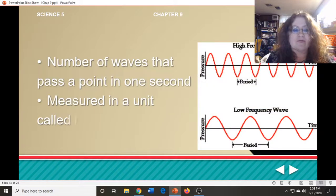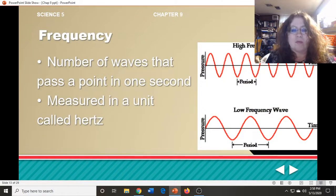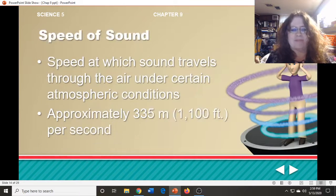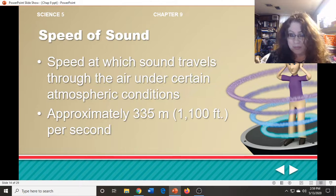We talked about frequency, the number of waves that pass a point in a second. Some waves have a very high frequency, some have a very low frequency, and they're measured in Hertz. We also discussed the speed of sound through the air: 335 meters or 1,100 feet per second, approximately, because weather can make that a little faster or slower.